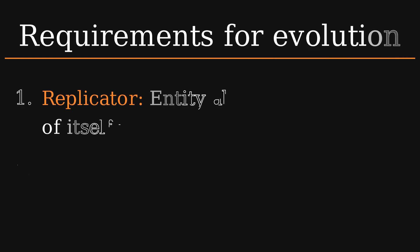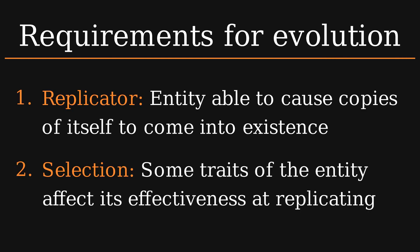In the video I showed you this screen, with the two requirements needed for a system to have evolution take place within it. I hope that these now make more sense to you, and that you understand not only why they're necessary for evolution, but also that it would be impossible not to have evolution if these requirements were fulfilled.